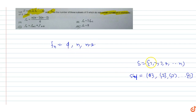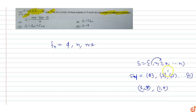Now for two-element subsets: with 1, we can take 1 and 3, 1 and 4, 1 and 5, and so on — we cannot take 1 and 2 (consecutive). So taking 1 with the next valid element gives us n minus 2 such subsets.